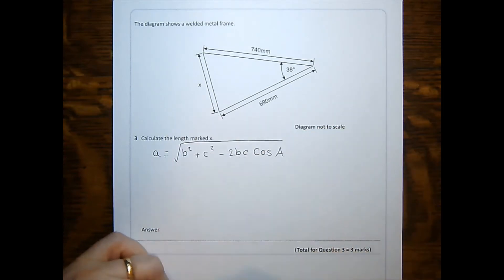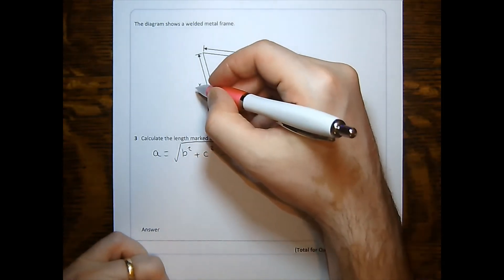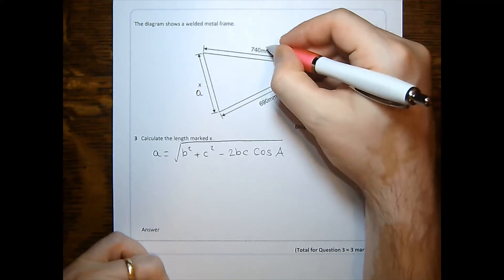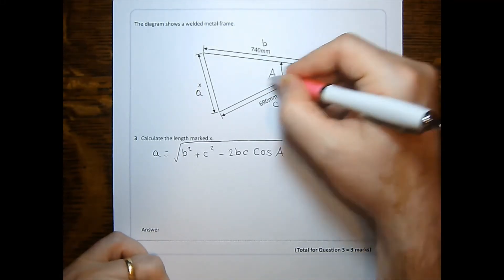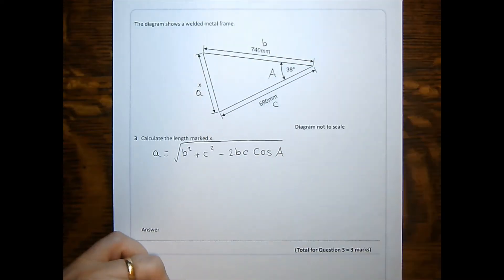Since we are after a side, x, the side we are after, we always label a. The other two, it doesn't really matter. And the angle is the angle opposite lowercase a is uppercase A.